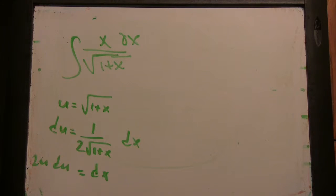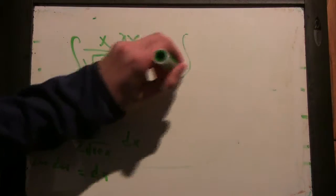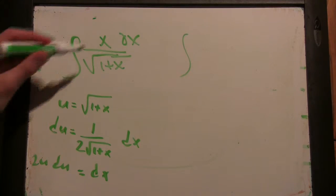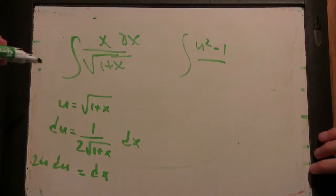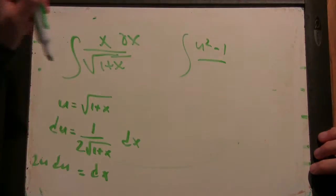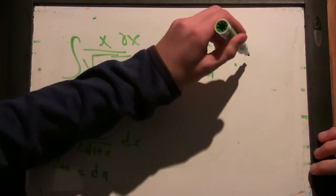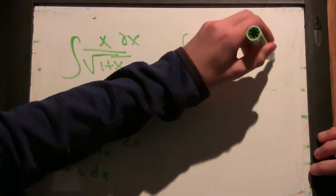Okay, nice. So, this turns itself into the integral. So, x is going to be u squared minus 1 and over u times 2u du.